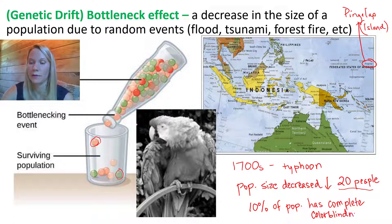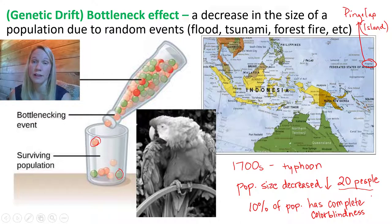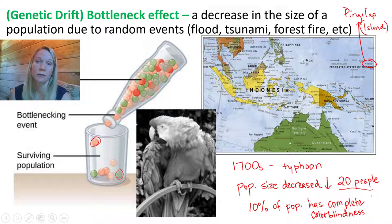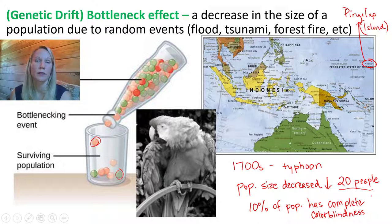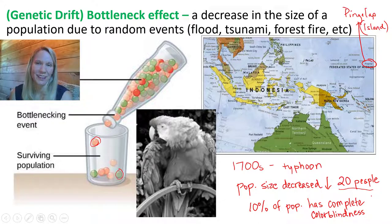The Pingalap case is a good example of a genetic bottleneck event, which randomly reduced the population, and by random chance someone had the complete color blindness allele, which was then passed on to future generations — changing the inherited characteristics of that population through biological evolution, but not due to selection.